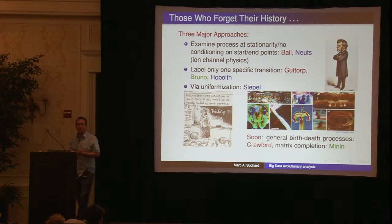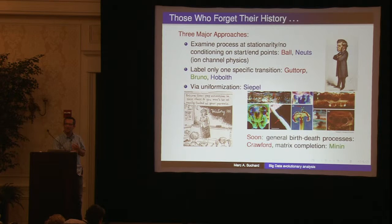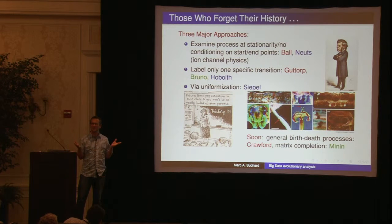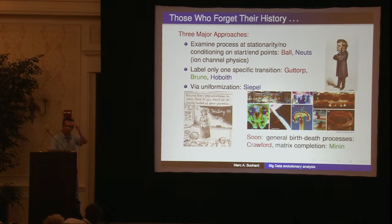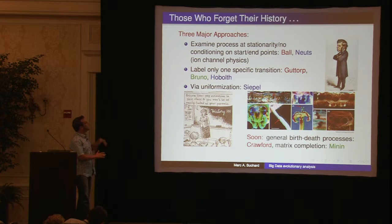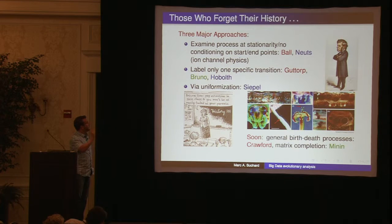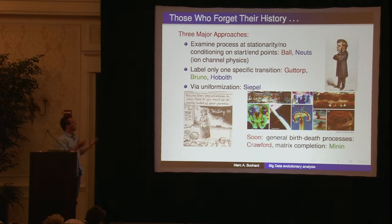I went back to the literature to figure out who has been working on end-conditioned continuous time Markov chains. And surprisingly, there's been very little work on it — which might mean it's relatively unimportant, or it's been surprisingly more difficult than we give credit. If you look at the process where you're not conditioning on the starting or end point, there's a fair amount of work in the probability literature with Frank Ball and Marcel Nutz, and it's used quite a bit in the physics domain. But when you start conditioning on the Markov chain at the end or at the beginning, there's very little work. The most influential is by Peter Gutert and recently a paper by Asghar Holbuth, and there are some simulation approaches.